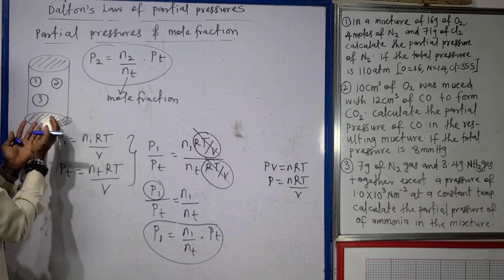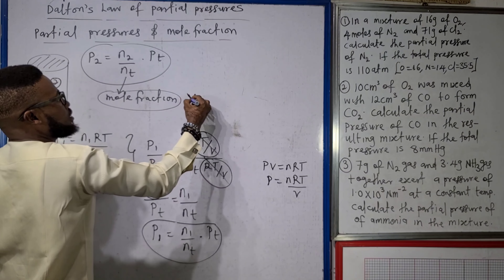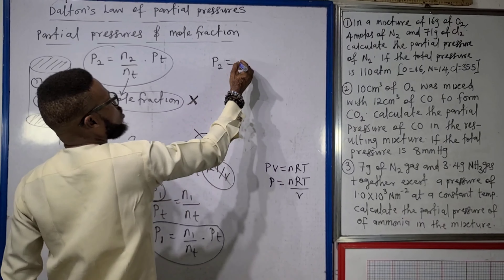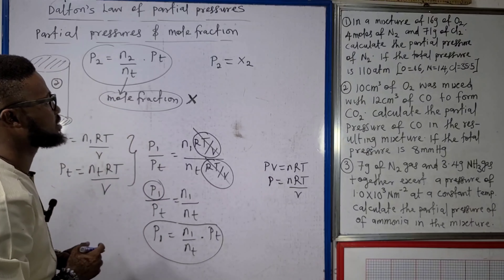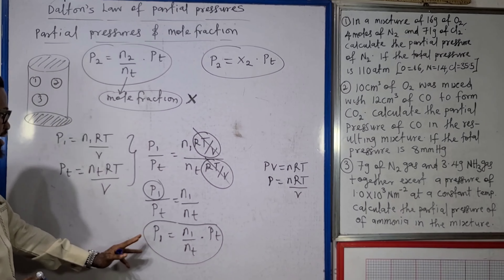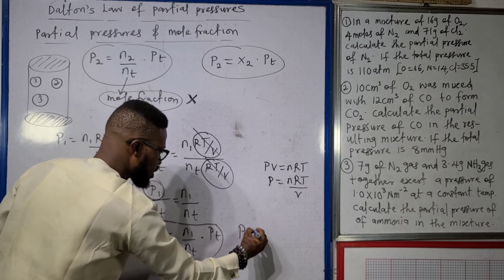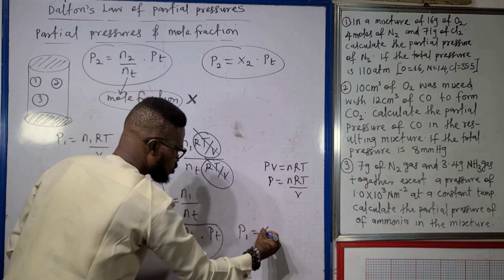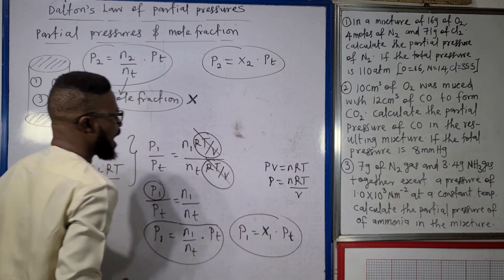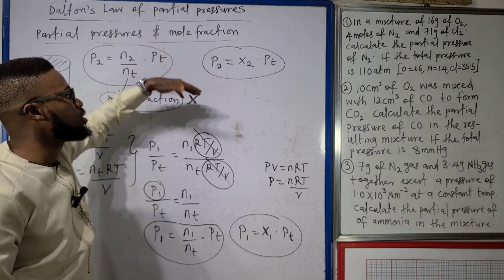The mole fraction is the number of moles of a gas compared to the total moles. Let mole fraction be represented by x. So the partial pressure of gas 2 equals the mole fraction of gas 2 (x₂) times the total pressure. Similarly, the partial pressure of gas 1 equals x₁ times PT. That's what mole fraction means in the context of partial pressures.